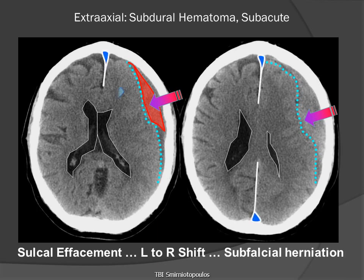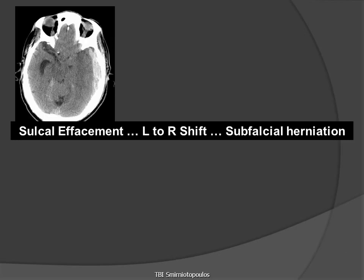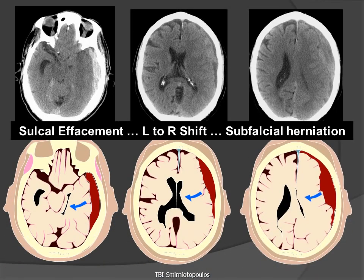When we have subfalcial herniation, the anterior portion of the lateral ventricle and the posterior portion of the lateral ventricle must move medially to pass through the central opening in the falx cerebri. Looking diagrammatically at three sections from the same patient, we can see how: number one, the sulci are effaced; number two, there is a nearly isoattenuating extra-axial collection, except in the lowest section in the middle cranial fossa; and three, we can also see that there is midline subfalcial herniation.